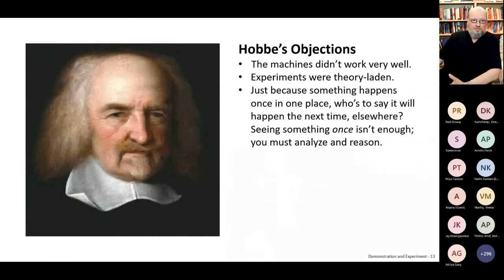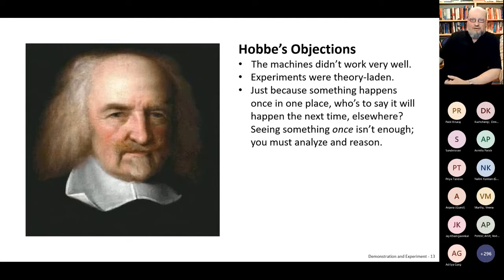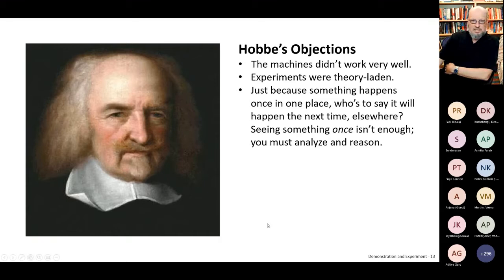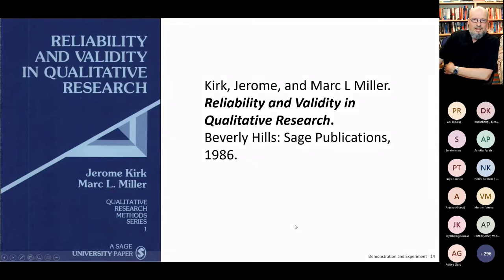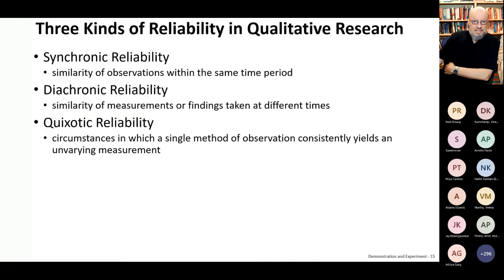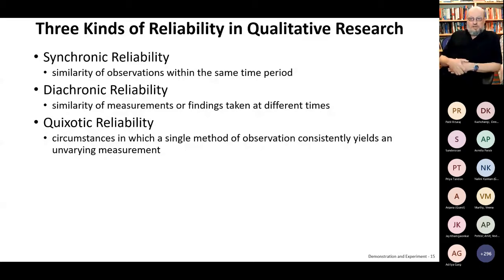Hobbes also said: just because something happens once in one place, who's to say it'll happen again next time or somewhere else? Seeing something once isn't enough — you've got to analyze and reason. For an experiment to have validity for Hobbes, it would have to be done in all kinds of places, not just in some drawing room in Pall Mall in London as the scientists of the day were doing. That reminds me of the problem of validity in science, and the problem of validity in testing too.